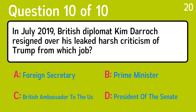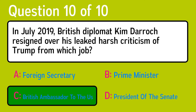And the last question is: in July 2019, British diplomat Kim Derrick resigned over his leaked harsh criticism of Trump from which job? The correct answer is C, British ambassador to the U.S.